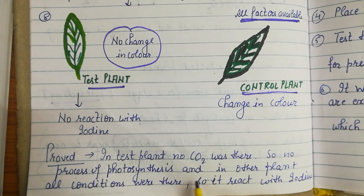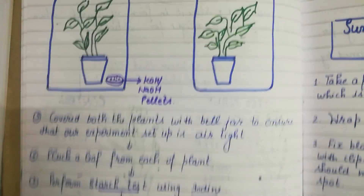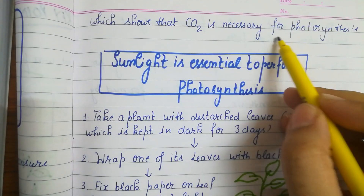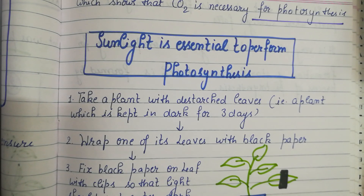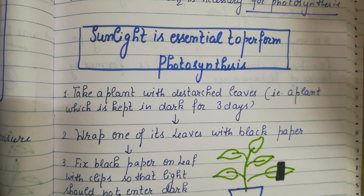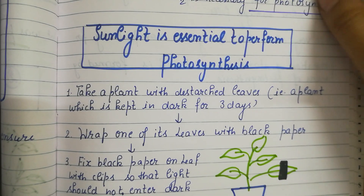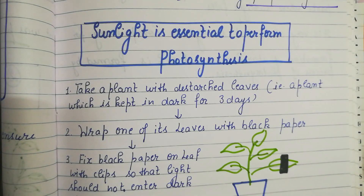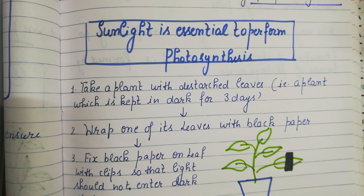So what is proved here is that in the test plant, since there was no CO2, there was no process of photosynthesis. In the other plant, all conditions were present, it reacted with iodine because starch was there, showing that CO2 is necessary for photosynthesis. If a plant is performing photosynthesis, starch will be present. Photosynthesis forms glucose, which is transported as sucrose and stored as starch.